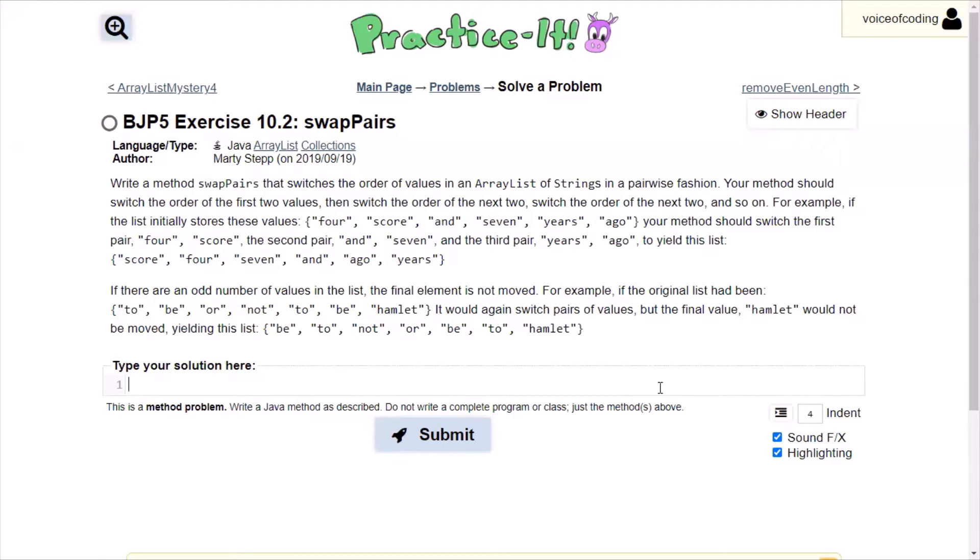The first thing that we need to do is make the method because this is a method problem and they don't want a complete program or class. Since we're not returning anything, we're going to just leave it as void.